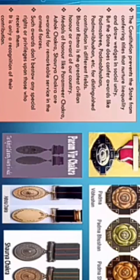The constitution of India has prevented the state from giving any titles that create inequality among members of society. But the state can confer awards like the Padma Shri, Padma Bhushan, and Padma Vibhushan for distinguished contribution in different fields. If any person has done remarkable work in their respective field, the government recognizes their work by giving such an award. Among all these awards, the Bharat Ratna is the greatest civilian honor given to any Indian citizen.